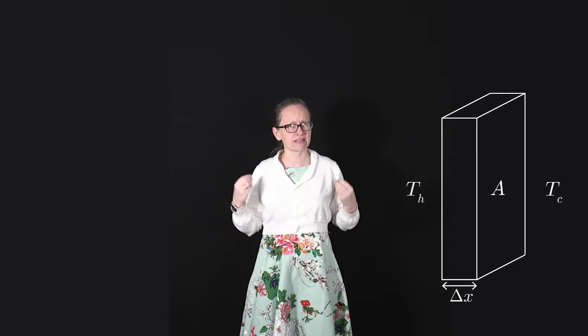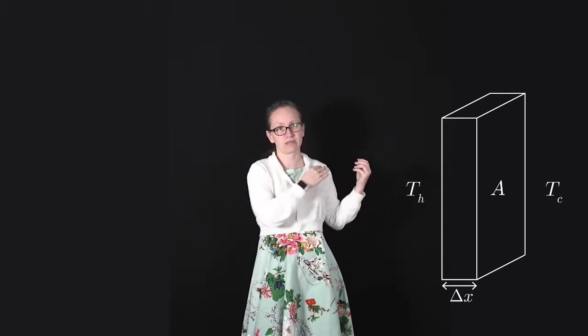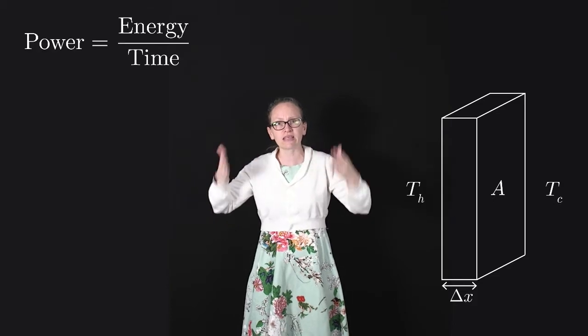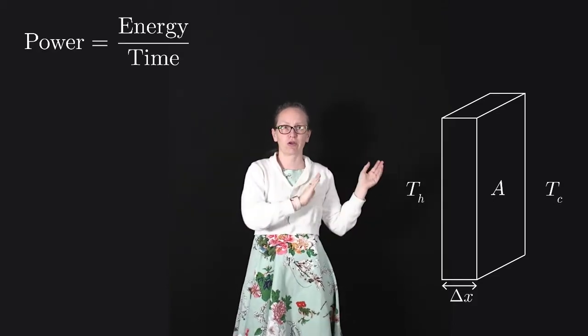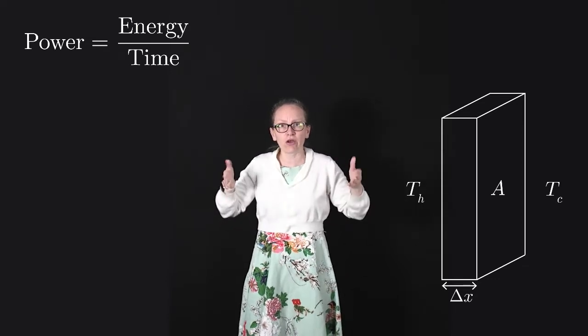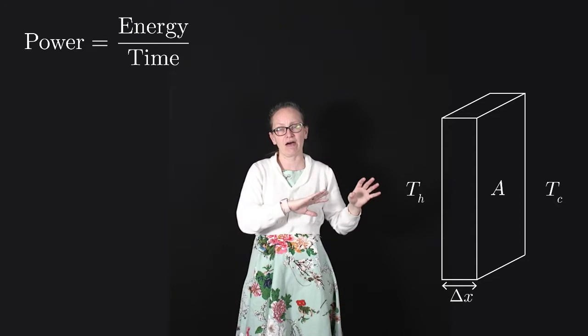So what we're trying to come up with is an equation to describe the rate at which heat flows through this block. This is the amount of heat per unit time which is flowing through it, and we know that energy divided by a time gives us a power.